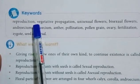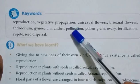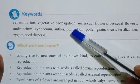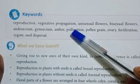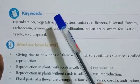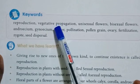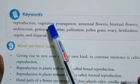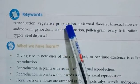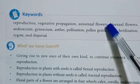Next, vegetative propagation. Vegetative propagation means production of new individuals from the vegetative parts such as stem, roots, and leaf of plants.